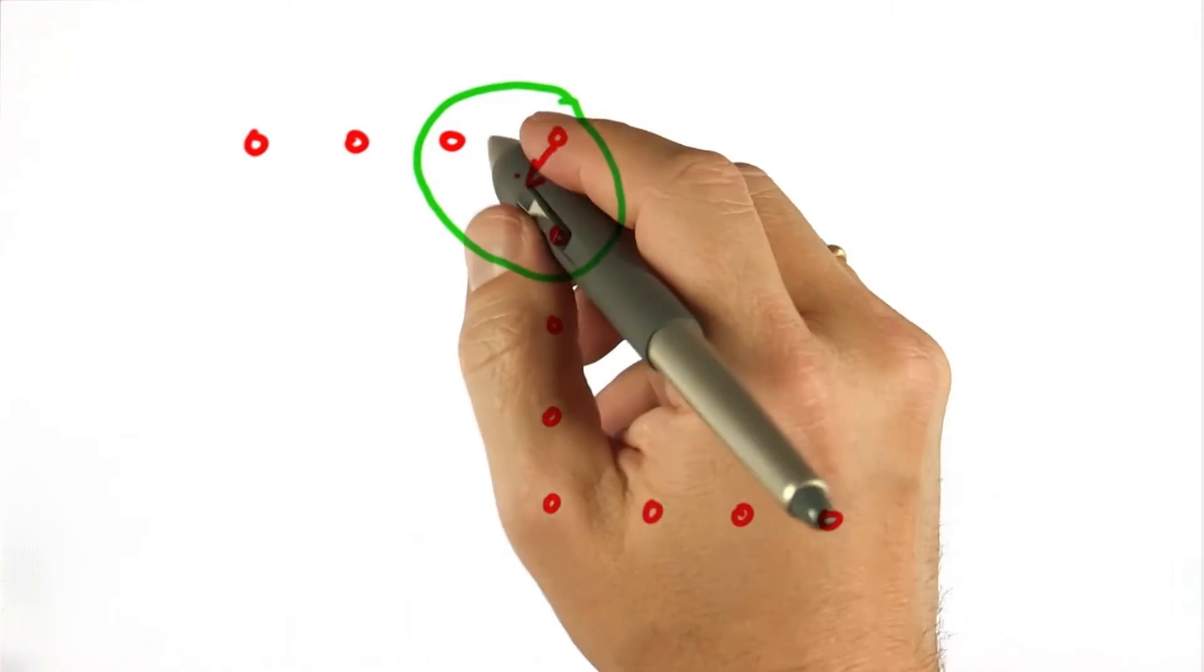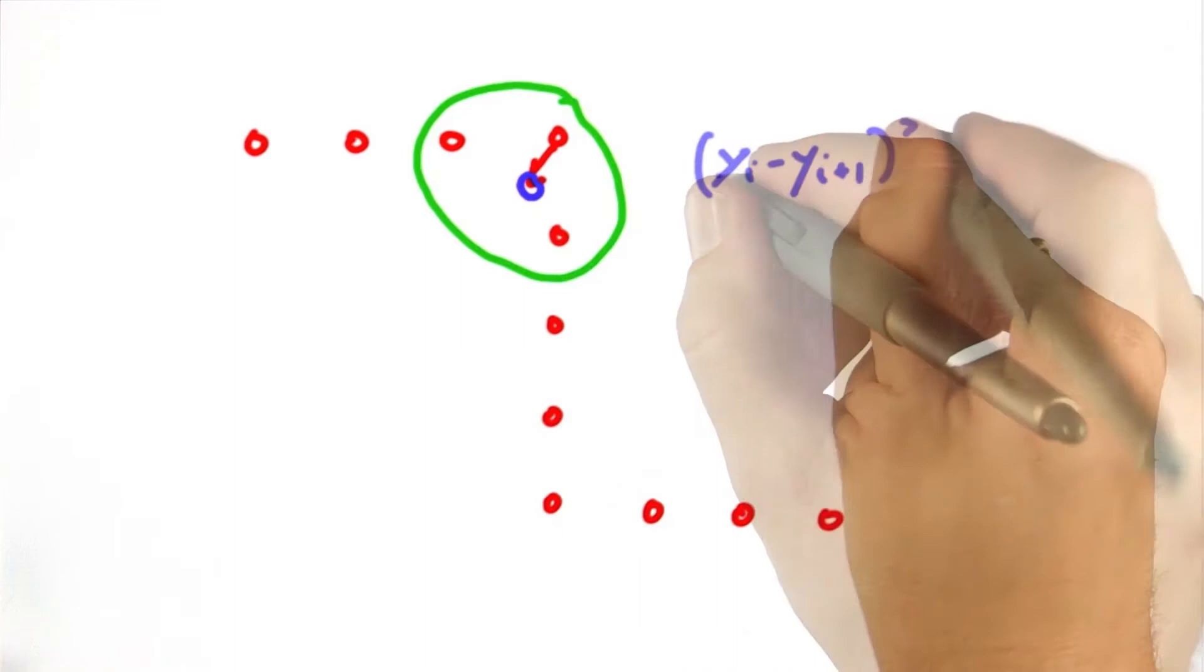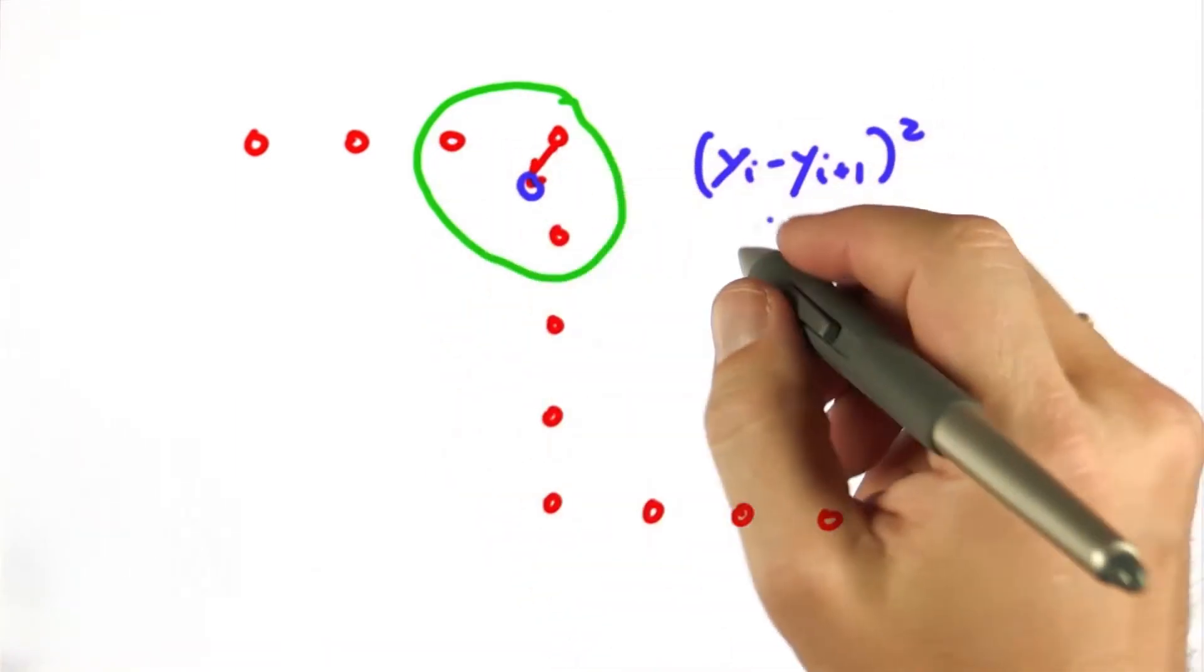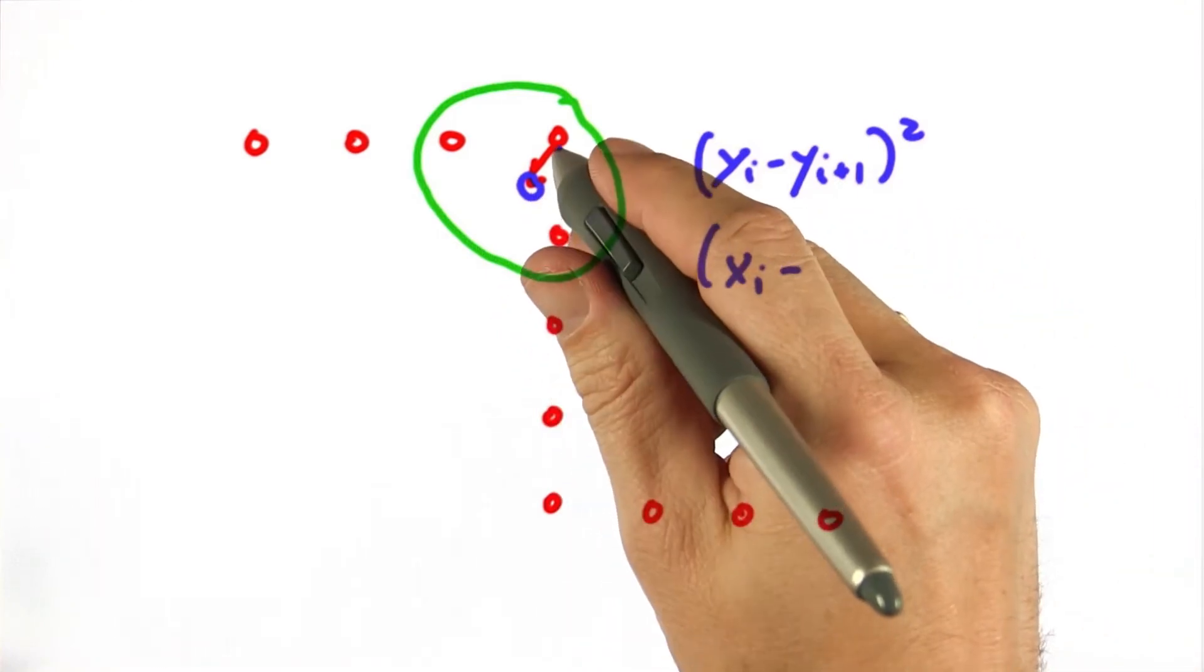and perhaps shifting the other points in other directions, we can decrease the second error term, both for this pair of points and this pair of points. However, we do this at the expense of the first error term, since we're now shifting the point y away from the original x.